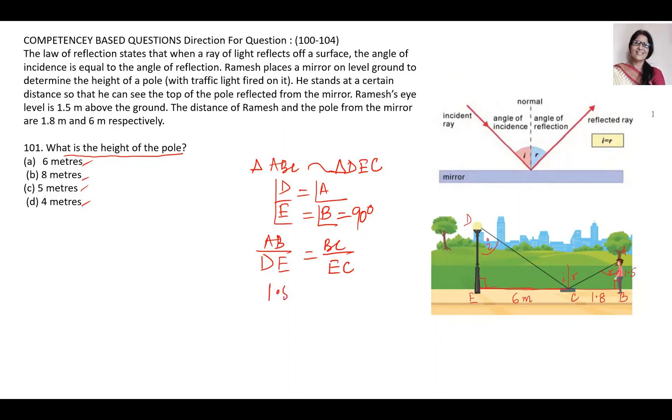DE is not given. Here it is given Ramesh's eye level is 1.5 above the ground. That means the height of AB is 1.5.